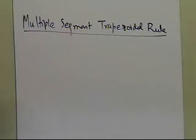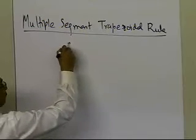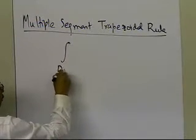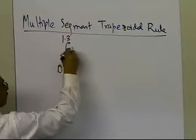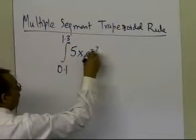So let me take the example. We had the integral going from 0.1 to 1.3, 5x e to the power minus 2x dx.